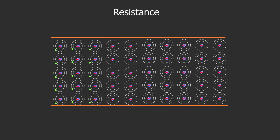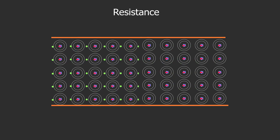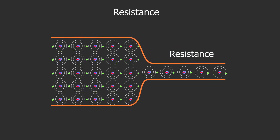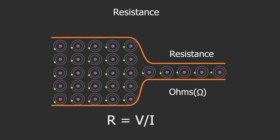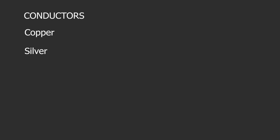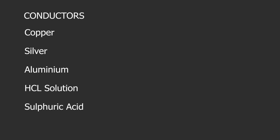What is resistance? Electrons move through a conductor when electric current flows. All materials impede the flow of electric current to some extent; this characteristic is called resistance. Resistance increases with an increase of length or decrease of cross-section of a material. The unit of measurement for resistance is ohms, and its symbol is the Greek letter omega. A resistance of one ohm means a conductor allows a current of one amp to flow with a voltage of one volt. Materials that allow many electrons to flow freely are called conductors, such as copper, silver, aluminum, hydrochloric solution, sulfuric acid, and salt water.